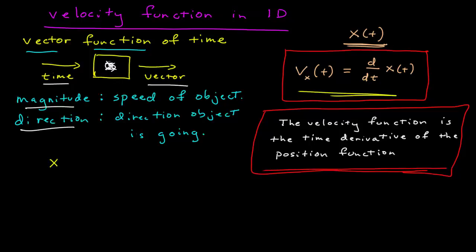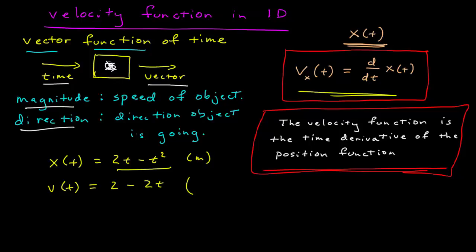Let's say I have a position function of time given by 2t minus t squared, where x is in meters and t is in seconds. The velocity function of time is the derivative of this. Differentiating the polynomial gives 2 minus 2t. Note: if position is in meters, then velocity is in meters per second — meters in the numerator and time in the denominator. So the velocity units are meters divided by seconds.